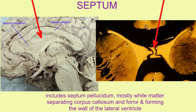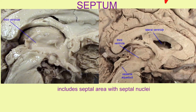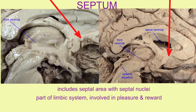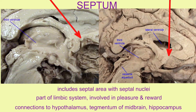This is mostly white matter, which connects the corpus callosum to the fornix, and forms the wall of the lateral ventricles. In addition, there are septal nuclei in a septal area at the base of this structure, and these nuclei have a role in the limbic system, given that they participate in the sensation of pleasure and in rewards.